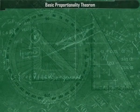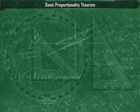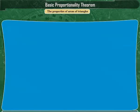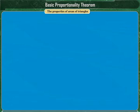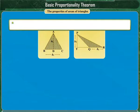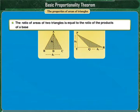Basic proportionality theorem. By using the properties of areas of triangles, we are going to study the basic proportionality theorem. We will revise these properties once again. We have learnt that the ratio of areas of two triangles is equal to the ratio of the products of a base and its corresponding height.